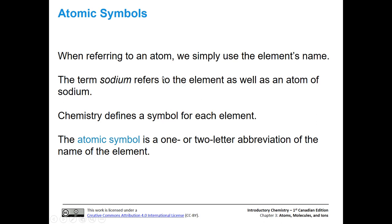When we refer to an atom, we always use the element's name. The term sodium refers to the element, or just an atom of sodium — we don't have to say 'atom of sodium.' Chemistry defines a symbol for each element called the atomic symbol, which is a one or two letter abbreviation of the element's name.